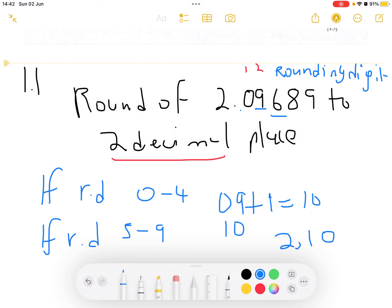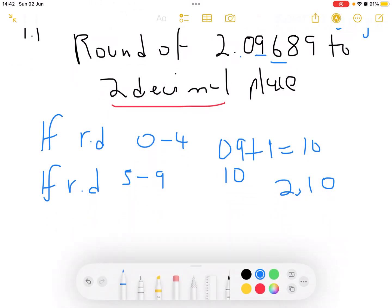If we round off 2.09689 to two decimal places, it can be written as 2.10 by identifying that this is found between 5 and 9. Therefore, we have to add 1 to the decimal places that they want us to work with, which is 0.9, those two decimal places. We write the answer in two decimal places.